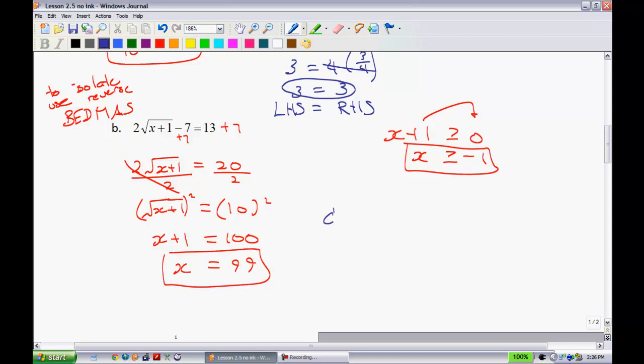All right, once again, I do want you to be performing checks for these every time. On the next page, we'll actually be going over some where if you do not do a check, you'll be absolutely hooped. All right, using brackets to substitute in, we get 2. And then let's simplify the radical here. 99 plus 1 is 100. The square root of 100 is 10. So this is 20 minus 7 is equal to 13. 13 equals 13.